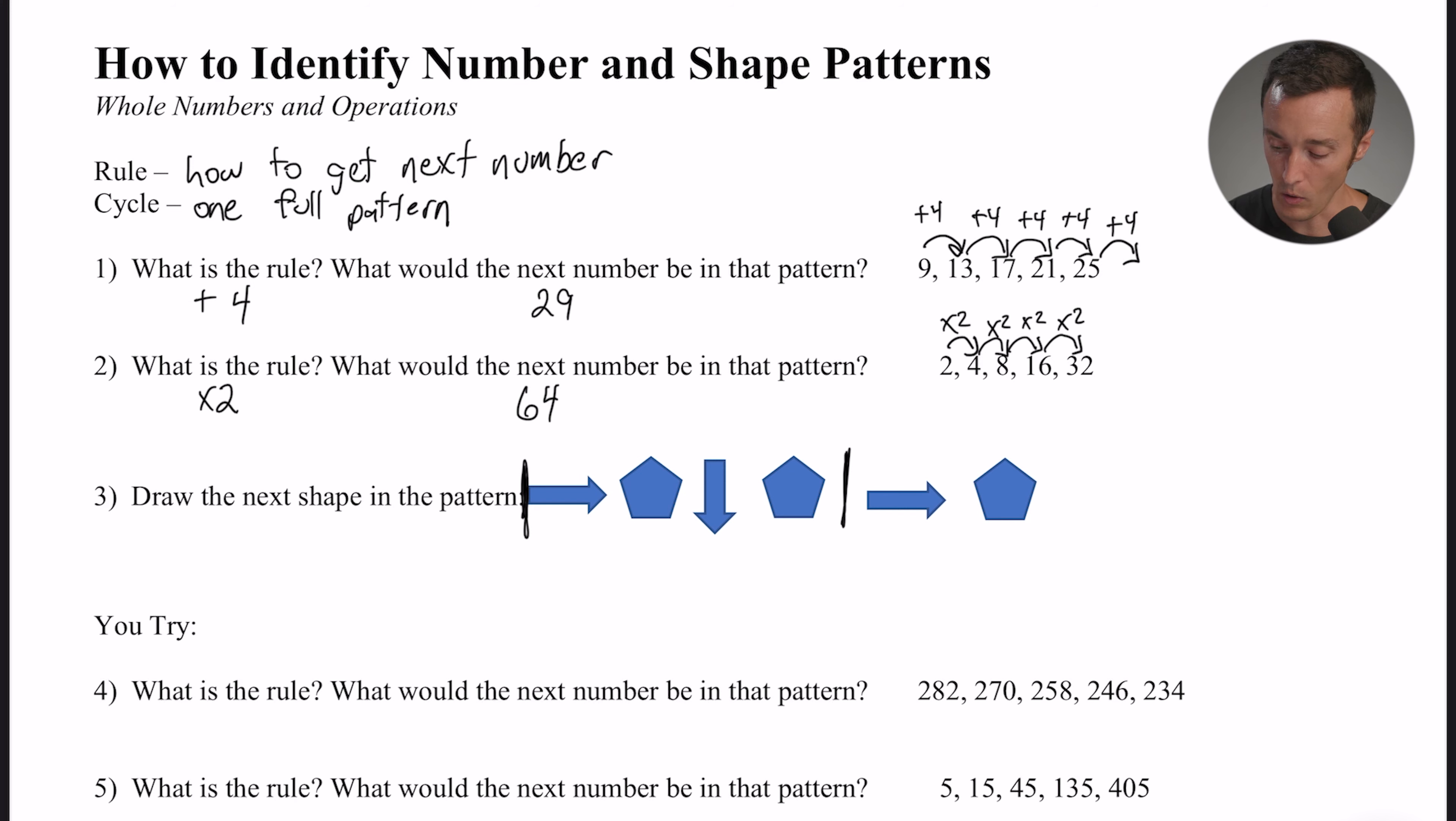It goes right, pentagon, down, pentagon, then it would start over again: right, pentagon. What would the next thing be? Well, it would be a down arrow. So the next shape in the pattern is a down arrow. And sometimes it's helpful to just identify where the cycle breaks so that you can kind of figure out what the next shape would have to be.